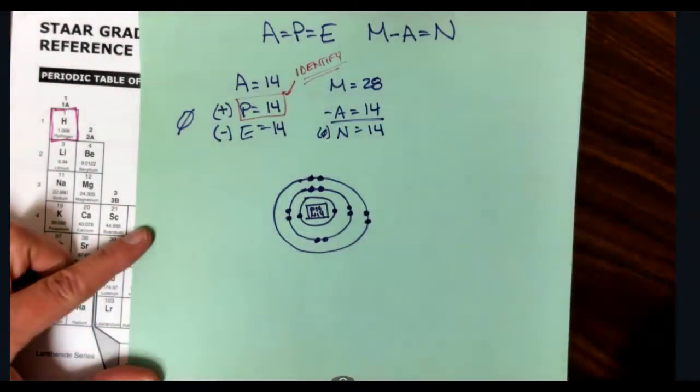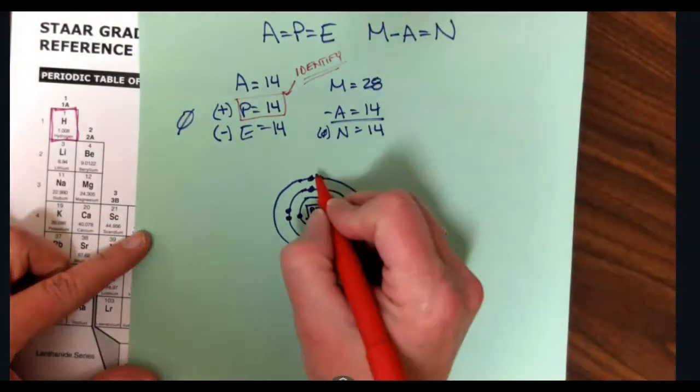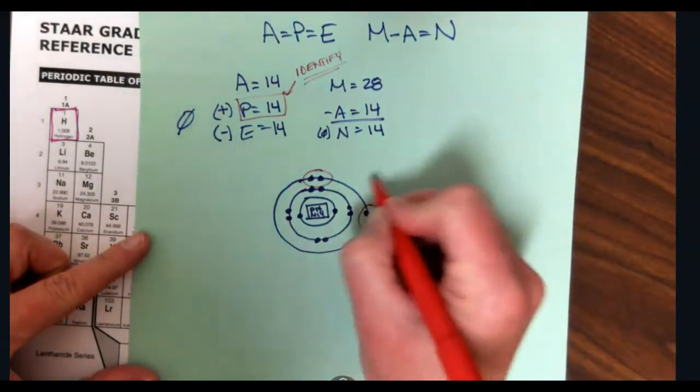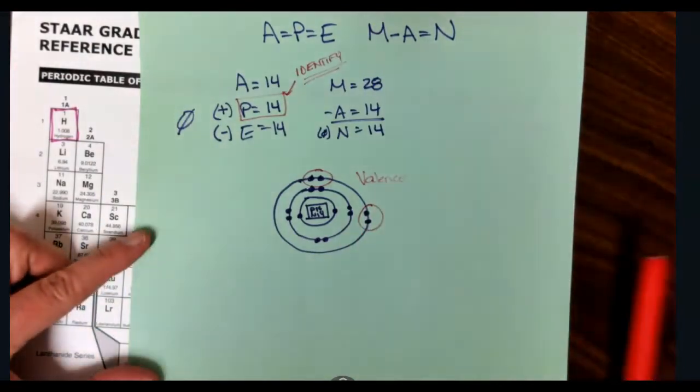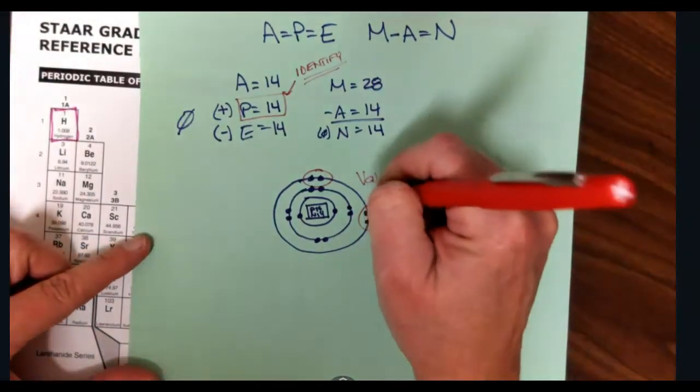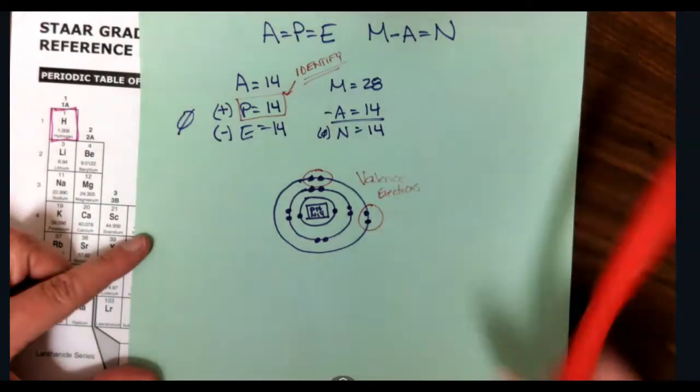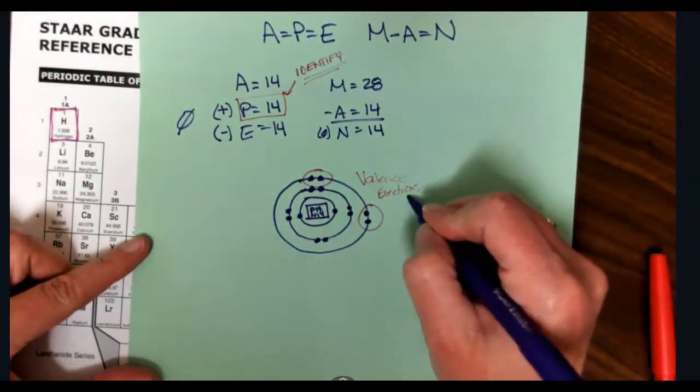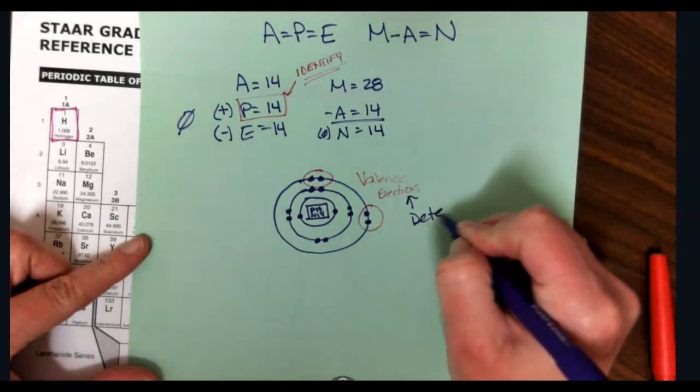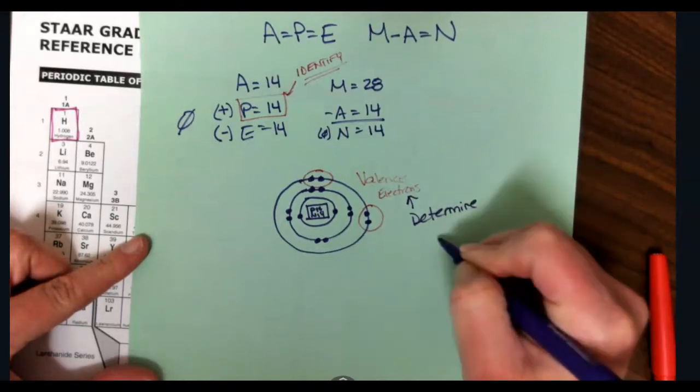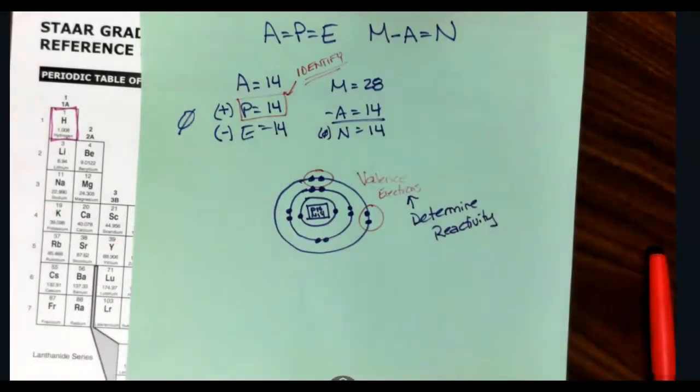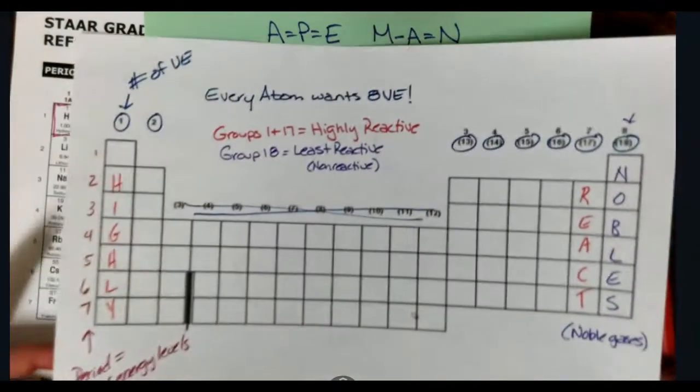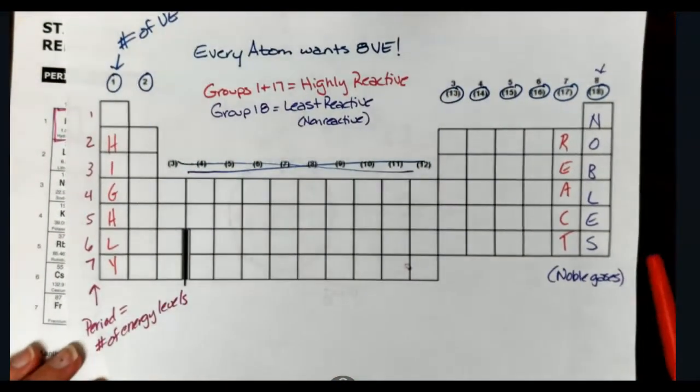Now any electrons in the last energy level are what we call valence electrons. So my valence electrons are what determine reactivity. So these determine reactivity. Now we can go through and do a Bohr model every time we need to identify the number of valence electrons, or we could look at the patterns.